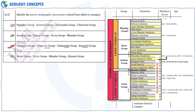For the Vindhyan Supergroup, we have Semri Group as the oldest, then Kaimur, Rewa, and Bhandar Group. So B and C are correct for question 32.